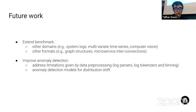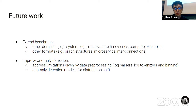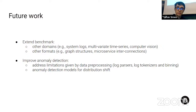As future work, we have two main directions. The first is to extend the benchmark to other formats, such as graph structures using IP address information, microservice infrastructures, and other domains including system logs, multivariate time series, and computer vision. The second direction is to improve anomaly detection by addressing preprocessing limitations — including log parsing, tokenizers, and binning — and by designing anomaly detection models specifically for distribution-shifted data. That concludes the first presentation.